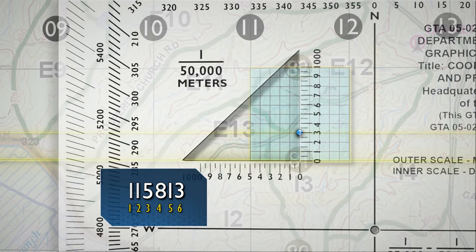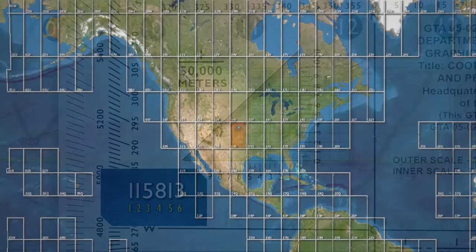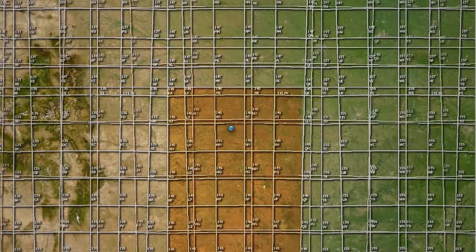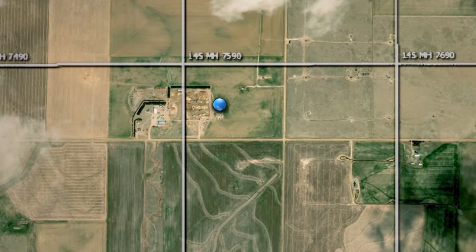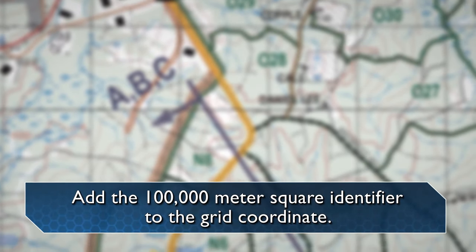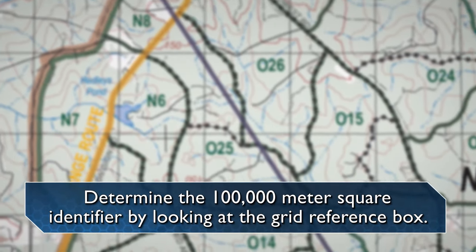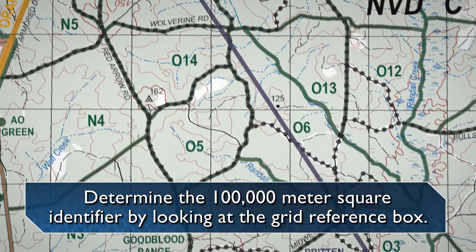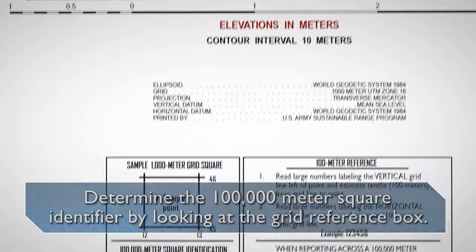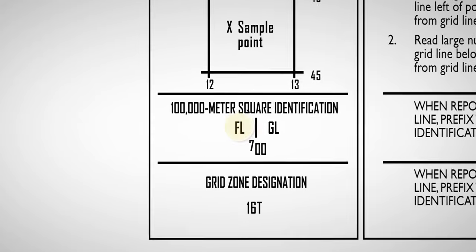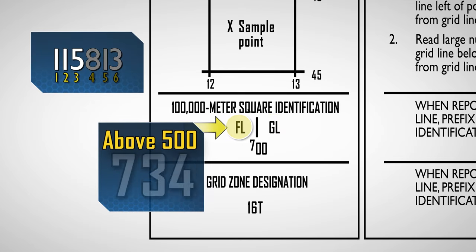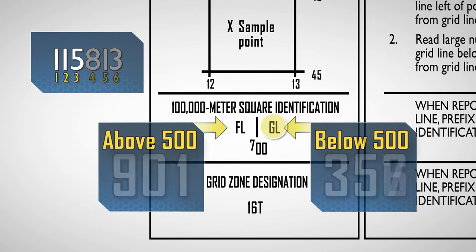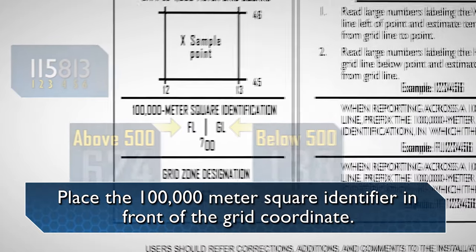There is a 100,000-meter square identifier, represented as a series of letters associated with each 100,000-meter square grid in the military grid reference system. Determining a location's 100,000-meter square identifier and adding it to your grid coordinate allows you to specify and communicate a location on a map with greater precision. Determine the 100,000-meter square identification by looking at the grid reference box in the margin of the map. Whenever a map covers multiple 100,000-meter square identification grids, as shown in this example with Foxtrot-Lima, and the first three digits are above 500, choose the left designator. If the first three digits are below 500, choose the right designator. Place the 100,000-meter square identifier in front of the grid coordinate.